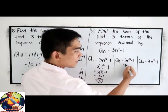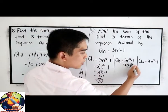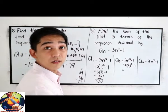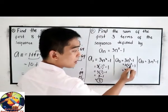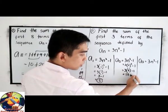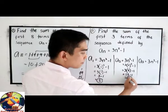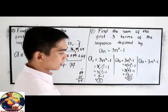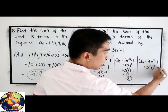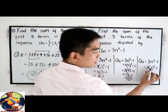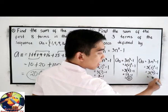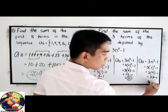For the second term, substitute n equals 2 into 3n squared minus 1. Don't forget PEMDAS — exponent first before we multiply. So 3 times 2 squared is 3 times 4, which is 12 minus 1, giving us 11. For the third term, substitute n equals 3: 3 times 3 squared is 3 times 9, which is 27 minus 1, giving us 26.